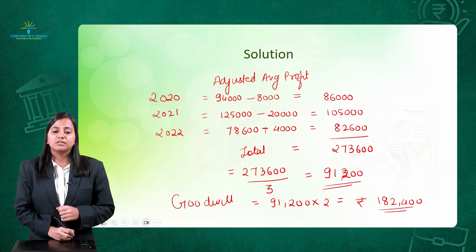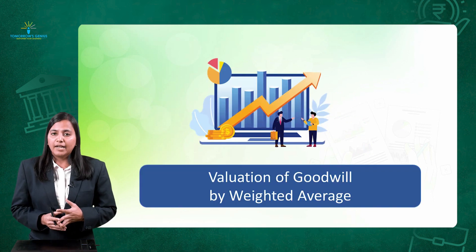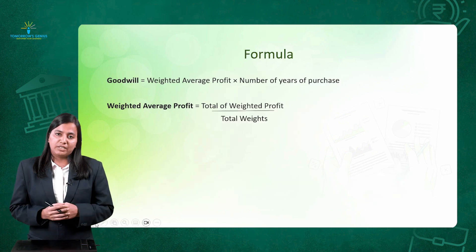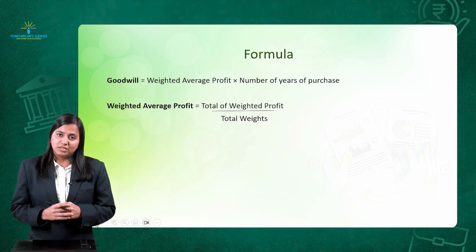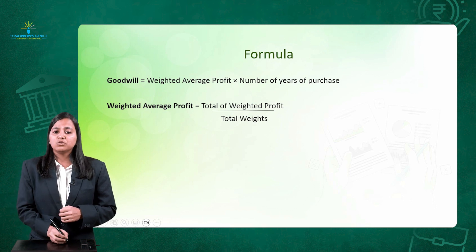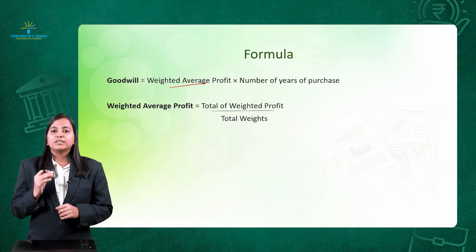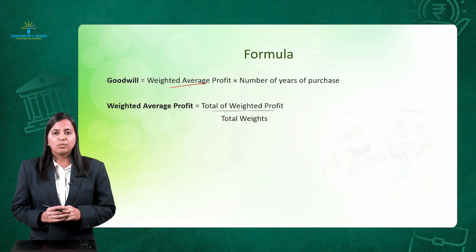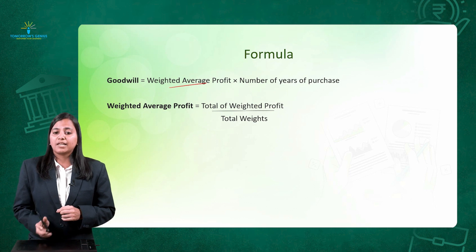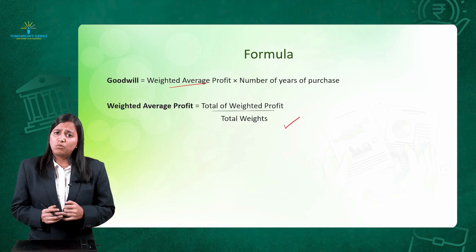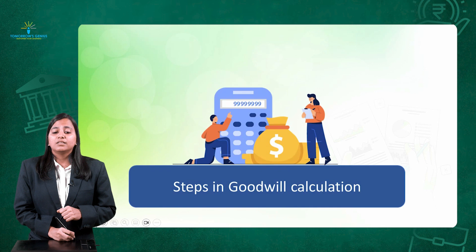Now we will understand the next method — valuation of goodwill by the weighted average method. The difference from simple average is that we apply weights here. The formula is: goodwill equals weighted average profit multiplied by number of years of purchase. Weighted average profit is calculated as: total weighted profit divided by total weights. We will understand this step by step.